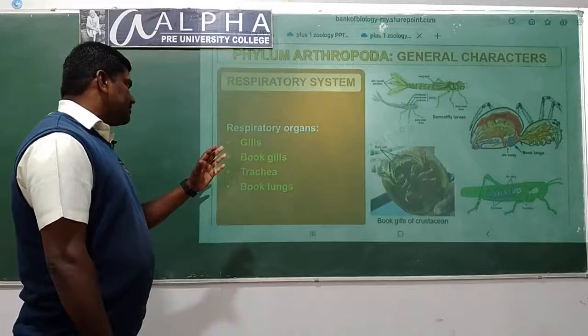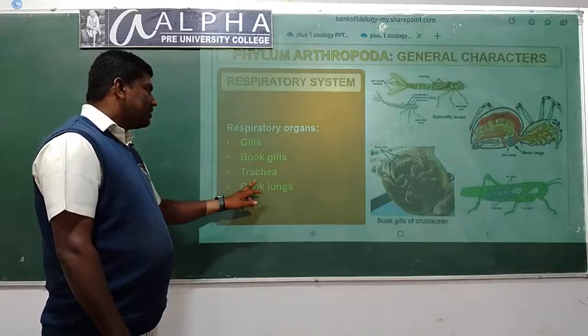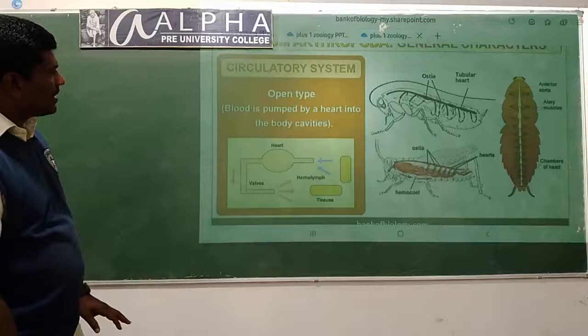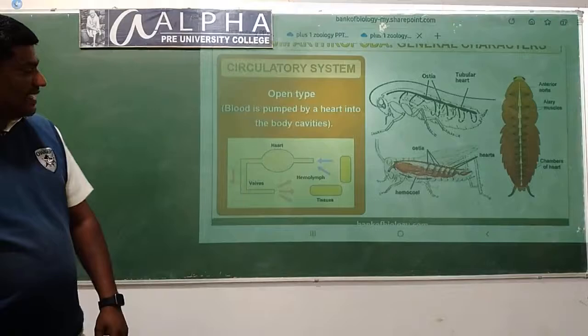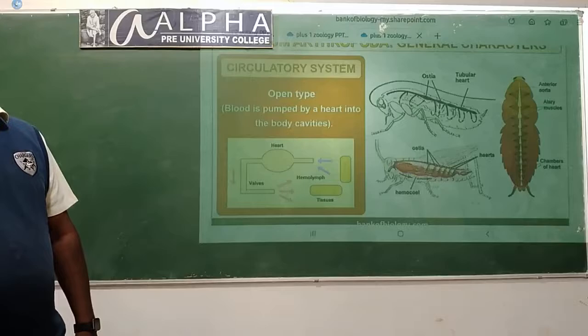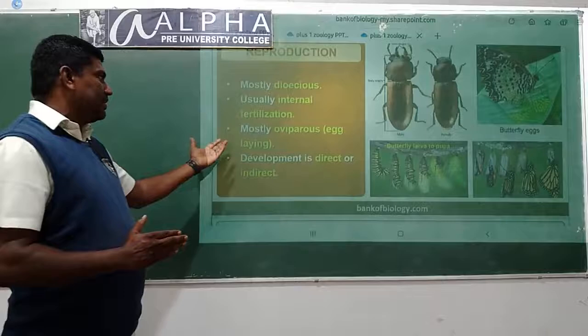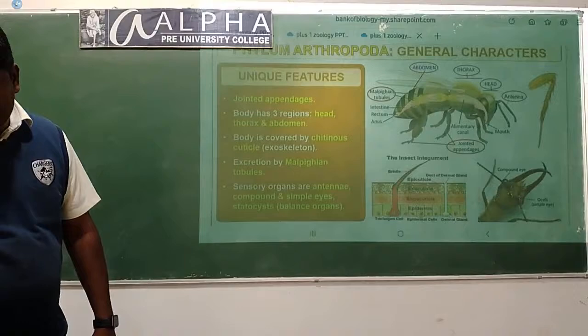Respiratory system consists of respiratory organs like gills, book gills, trachea, and book lungs. Circulatory system is open type - the blood is pumped by a heart into the body cavities called the haemocoel, and the blood is called haemolymph.